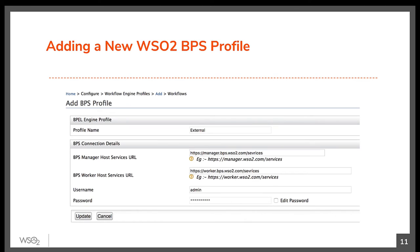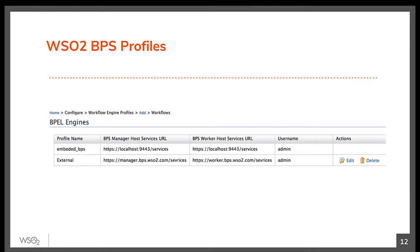Now, let us take a deeper look at the configuration supported by the WSO2 Identity Server for workflow management. This is where you can add new WSO2 BPS profiles to point to external WSO2 BPS clusters. The embedded BPS profile comes by default and cannot be modified or deleted. It represents the human task components that come installed as part of the identity server. However, we don't recommend using the embedded human task components for large scale scenarios with high throughput requirements.